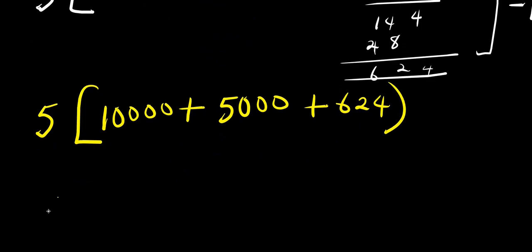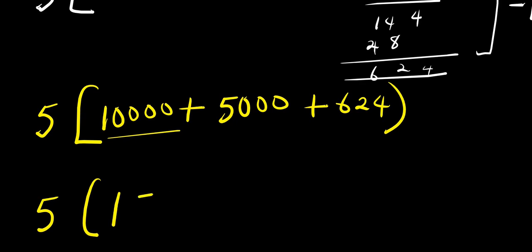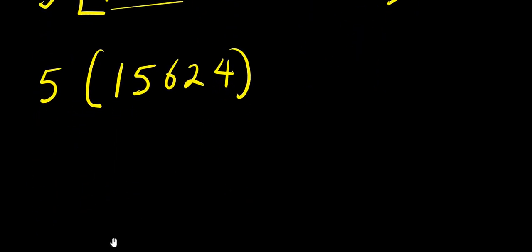From here I have 5 times 10,000 plus 5,000 is 15,000, plus 624, that is 15,624. So we are going to multiply this out.